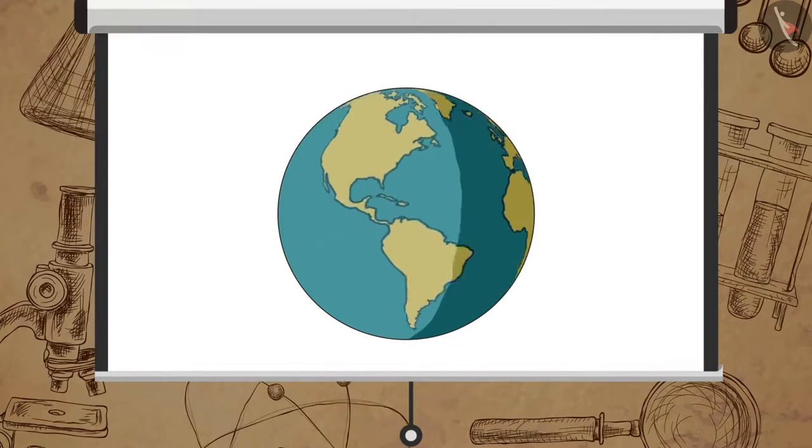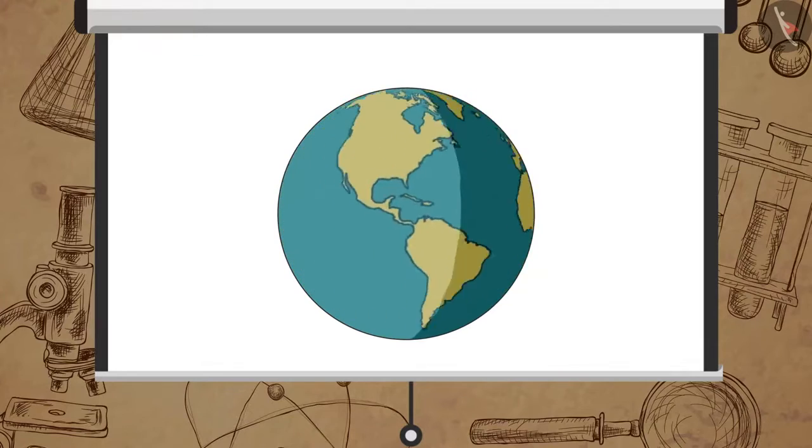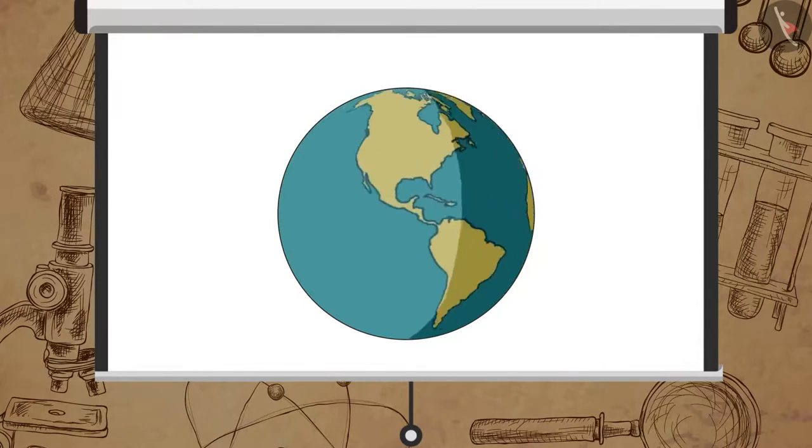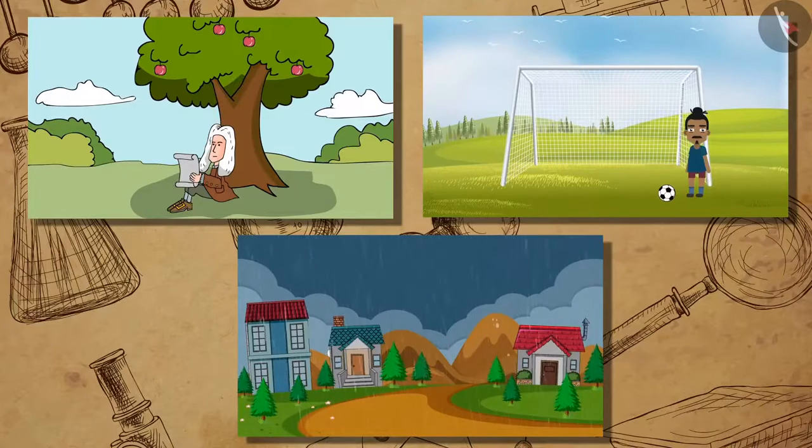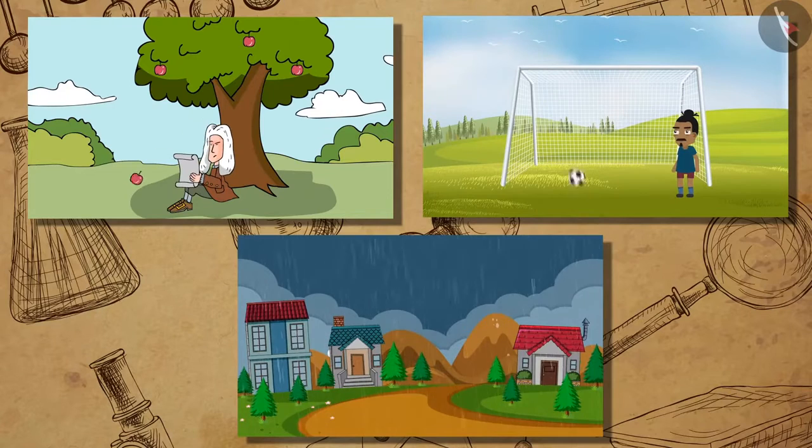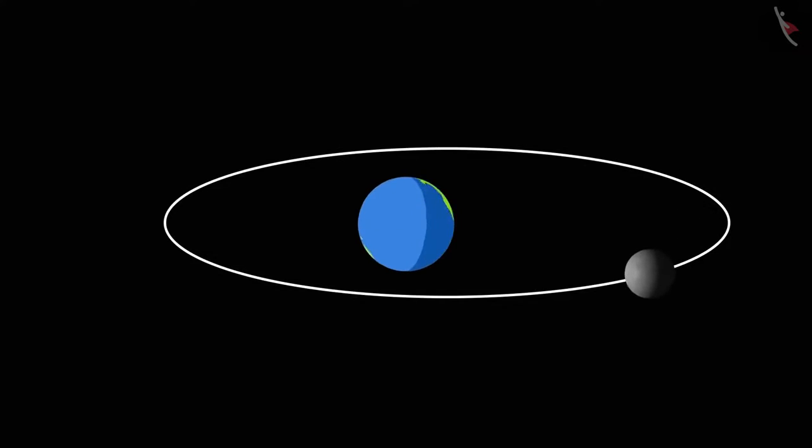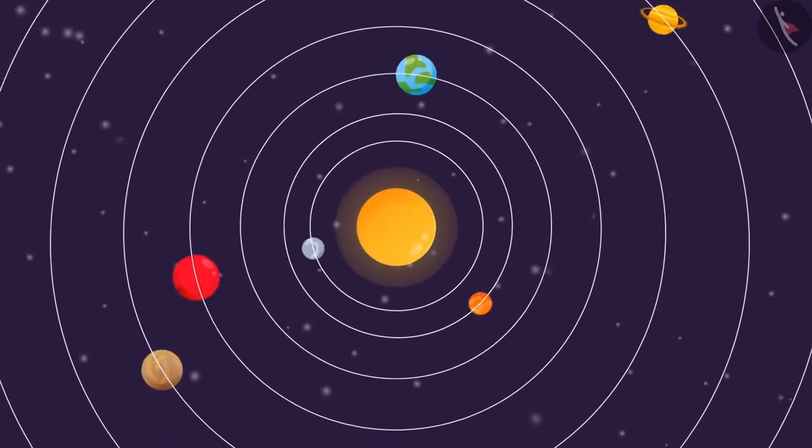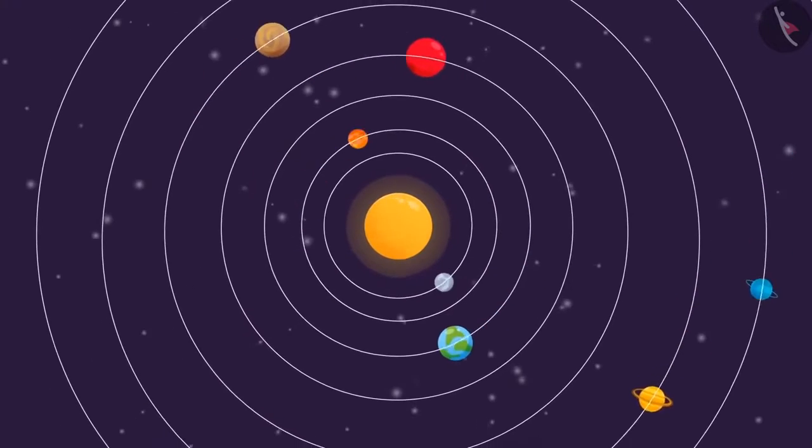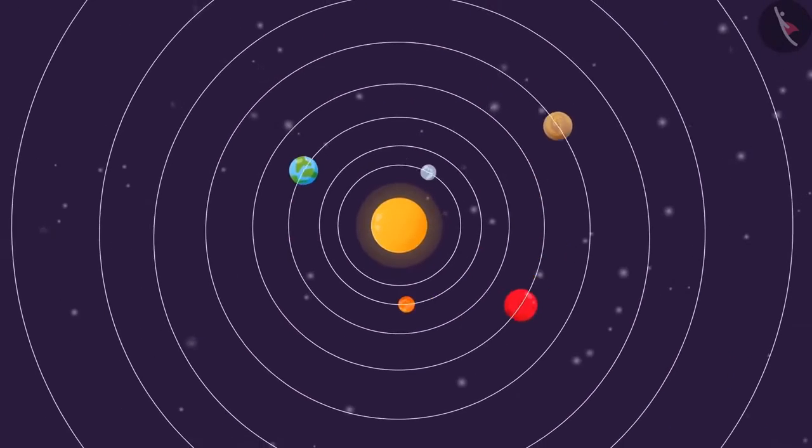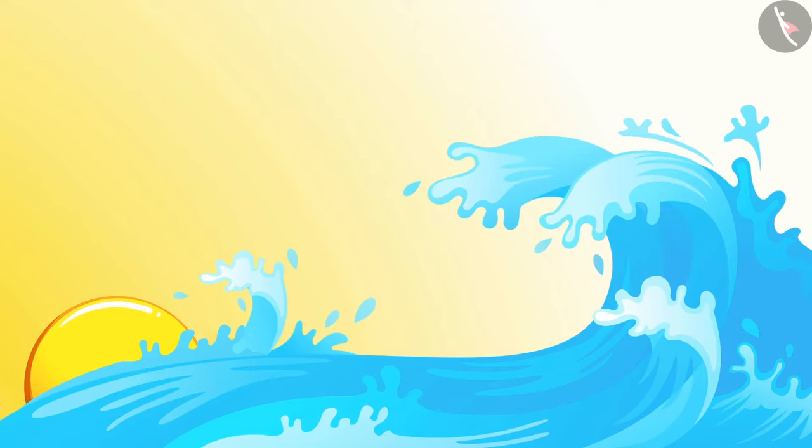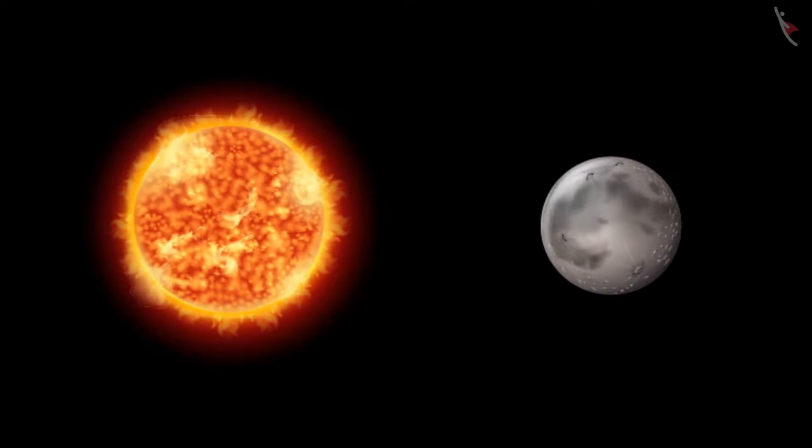Newton's universal law of gravitation explained some very important occurrences on Earth. It proved the existence of a force that binds all of us to the Earth. It proved how it is possible for the Moon to be in motion around the Earth and also how it is possible for the planets to revolve around the Sun. It also explained the phenomenon of tides, which occur due to the gravitational pull of the Moon and the Sun.